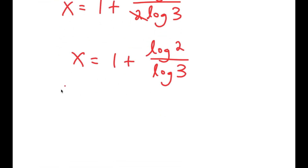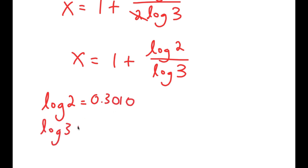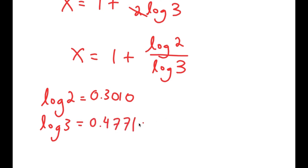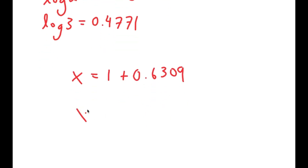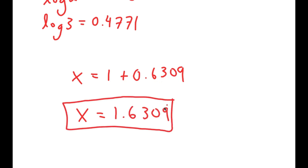Log 2 is equal to 0.3010 and log 3 is equal to 0.4771, meaning x is equal to 1 plus 0.3010 over 0.4771, which is equal to 0.6309. So 1 plus 0.6309 is 1.6309. This is my solution.